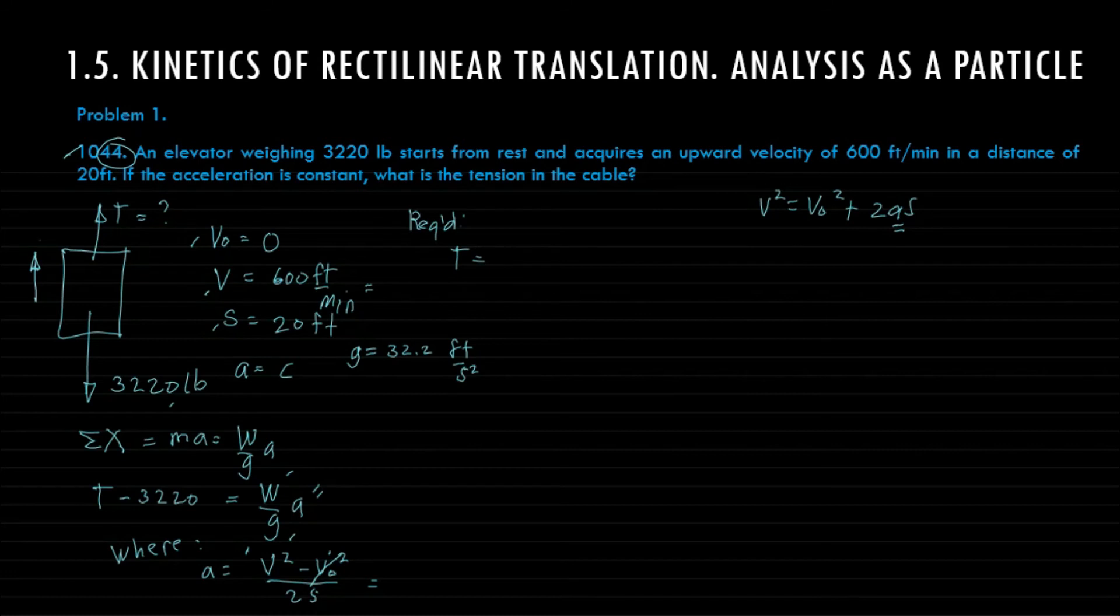Because our gravity is 32.2 feet per second squared, just divide it by 60 since one minute equals 60 seconds. So we have now feet per second. Substitute: 10² minus 0 over 2 times s which is 20 feet.